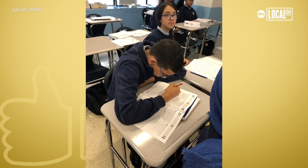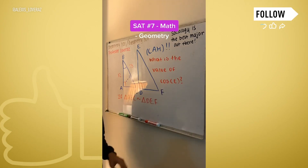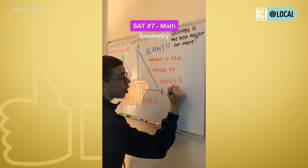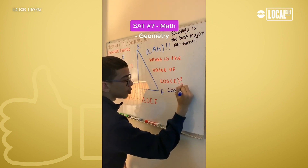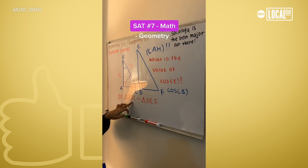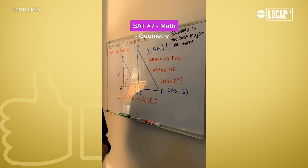And the language as well — the language between a student and a student can be different compared to the language of a student and teacher. Cosine B — that is the same thing as asking what is the cosine of B. Because of similarity, that means that angle B and angle E must be congruent.